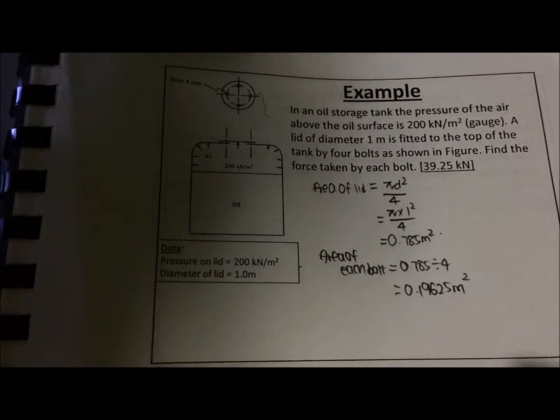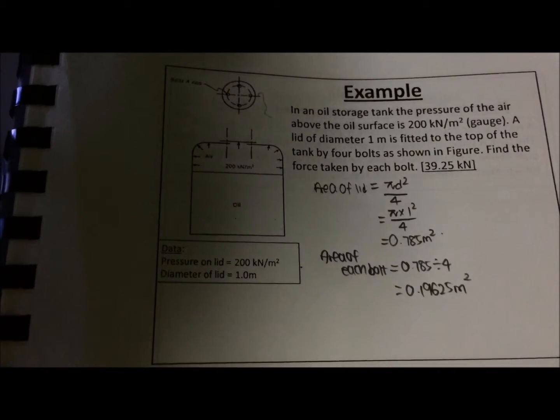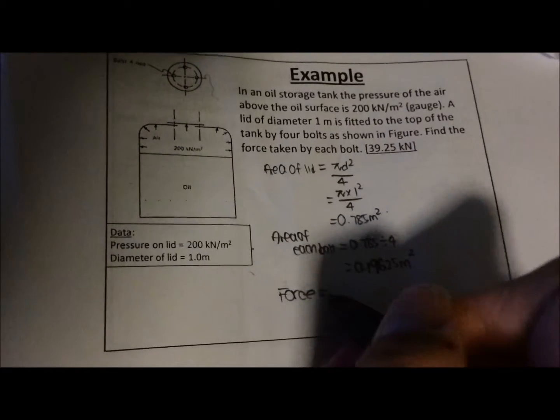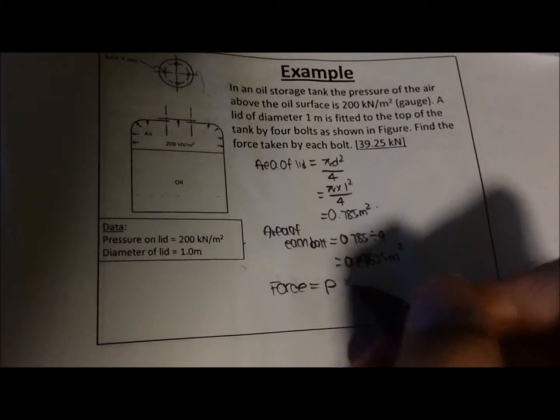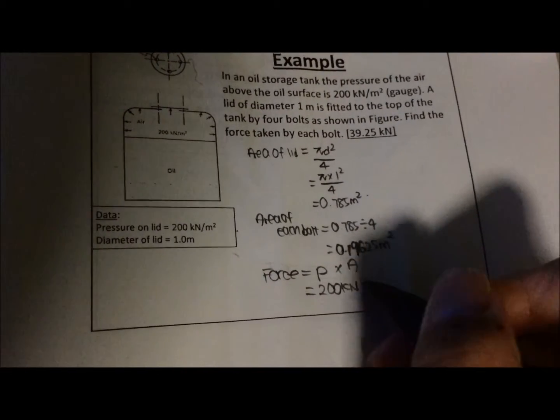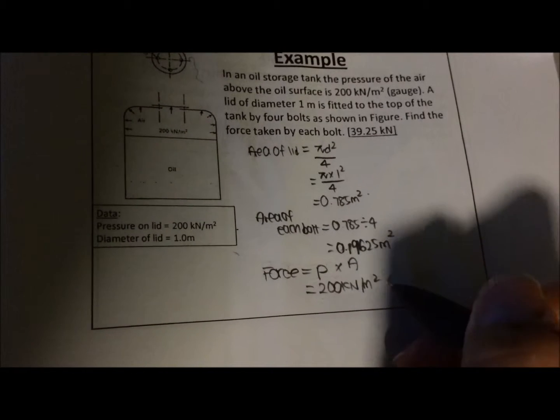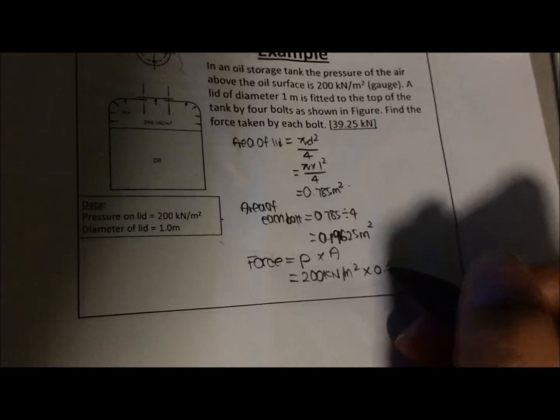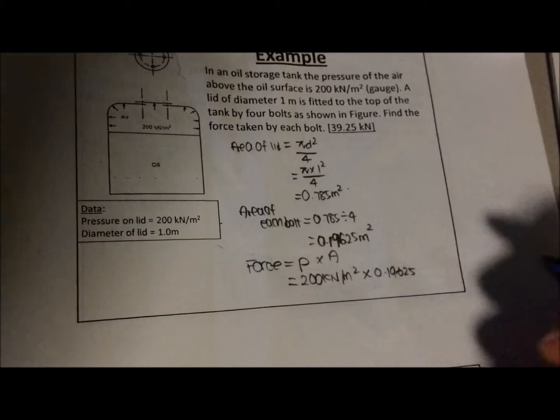Force equals pressure times area. In this question, we are given the pressure equals 200 kilonewton per meter squared, times the area which is 0.19625 meter squared, and you will get